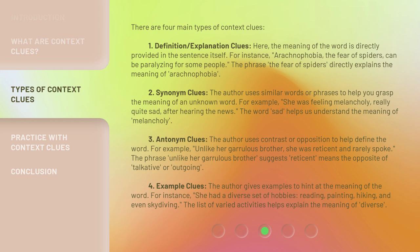The phrase "unlike her garrulous brother" suggests that "reticent" means the opposite of "talkative" or "outgoing."